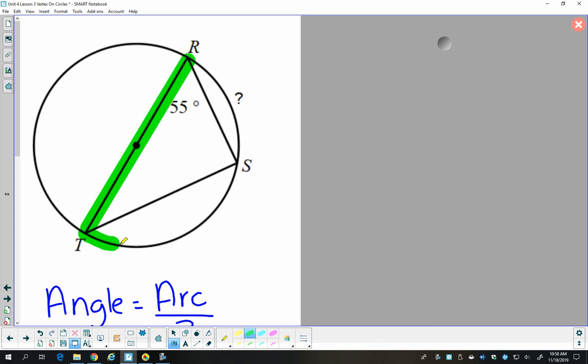And so I see here a diameter. And a diameter creates a semicircle, which is 180 degrees. And I'm looking for a part of that semicircle, just this part arc RS. I do have an inscribed angle here that's 55 degrees. But that inscribed angle intercepts this arc TS.